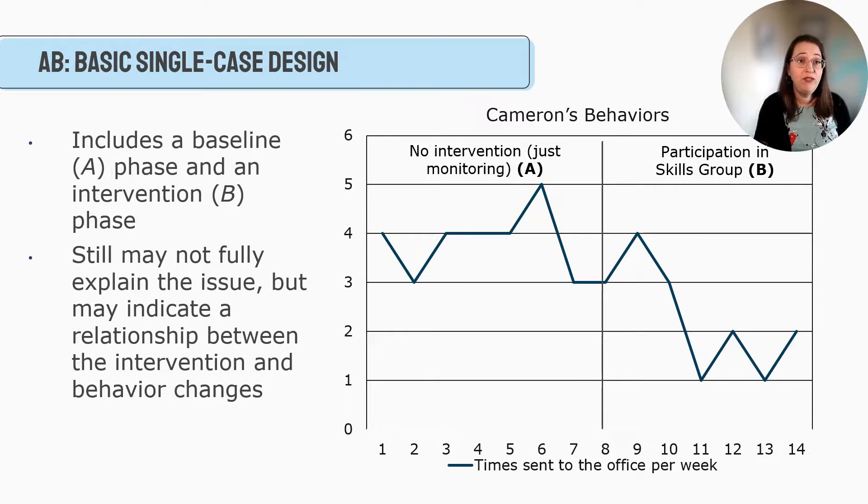So once we've gotten our A phase done and charted, then we can do what's called an AB or a basic single case design. This typically has one baseline phase A and the intervention phase B. So for example, let's say we're looking at Cameron's behaviors. He's an elementary school age child. We're looking at the number of times sent to the office per week. So maybe for the first few weeks, we just monitor him. We don't implement an intervention. Maybe we look through his records to do a past or retrospective baseline. So we kind of get this idea of where he's at. And it looks like when he doesn't have an intervention, Cameron is going to the office between three to five times per week for the first seven weeks or eight weeks.